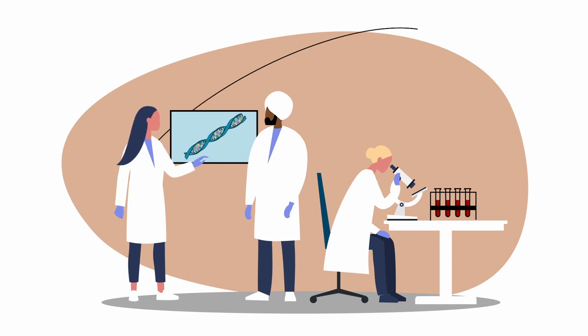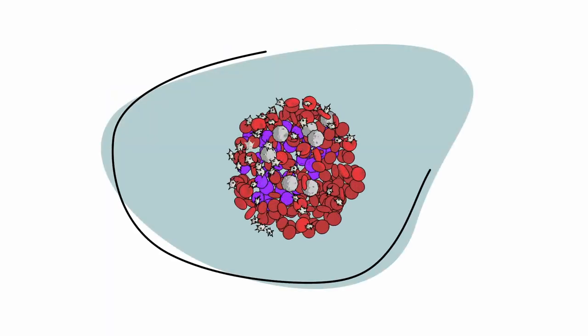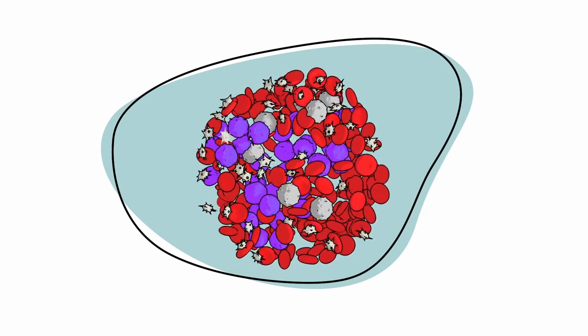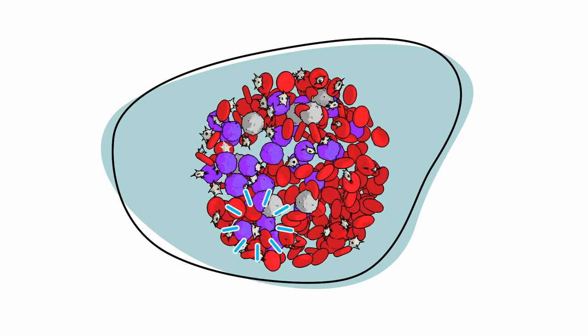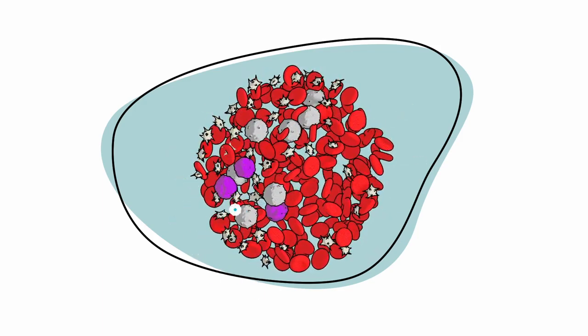Developments in our understanding of the genetics of CLL have led to new targeted therapies. Targeted therapies work by attacking cancer cells directly without damaging normal cells.